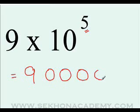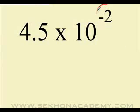How many zeros? In this case, five zeros, because the exponent was five. So 900,000 is the standard form.